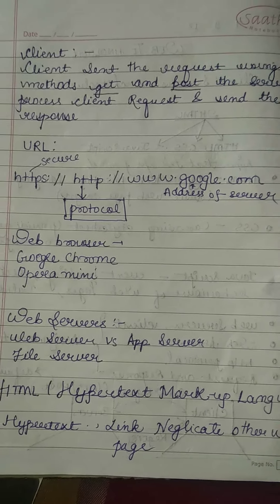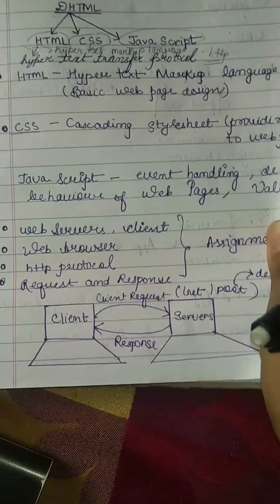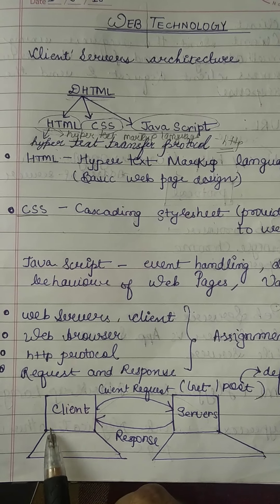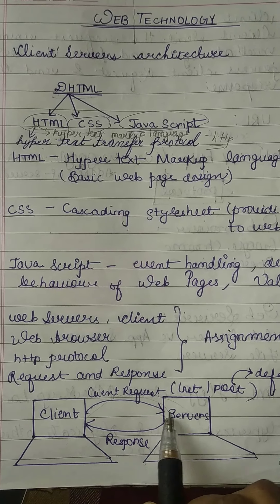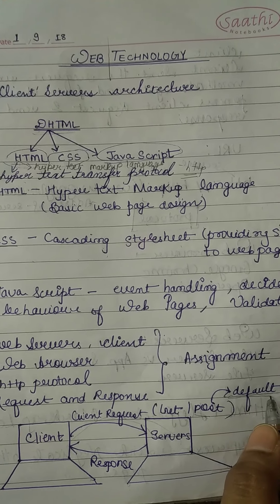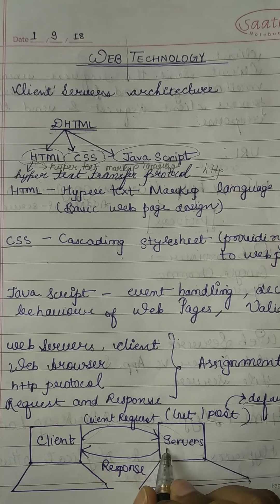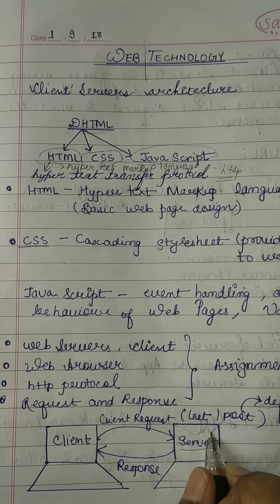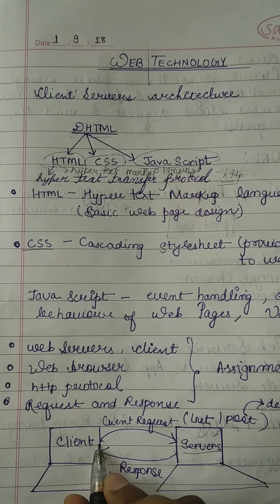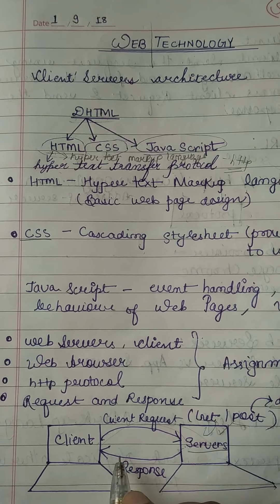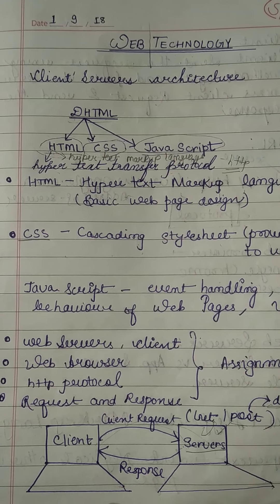I will now show you the figure for that. Here, this is the client. The client is sending a request through GET method and POST method, which are the default methods. It is sending the request to the server, and the server is getting that request and then sending the response back to the client.